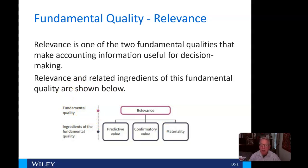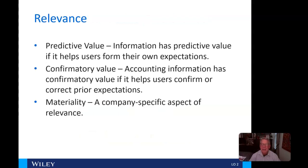Relevance is one of the two fundamental qualities that make information useful. We want information to have predictive value, confirmatory value, and be material. Predictive value means information that helps users form their own expectations, usually about the future. Confirmatory value helps users confirm or correct prior expectations. And materiality is a company-specific aspect of relevance.